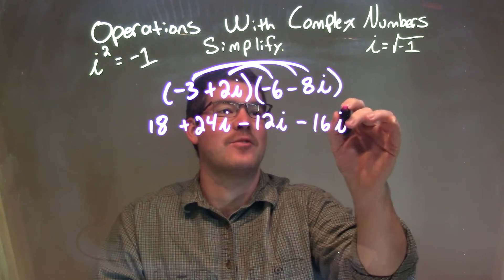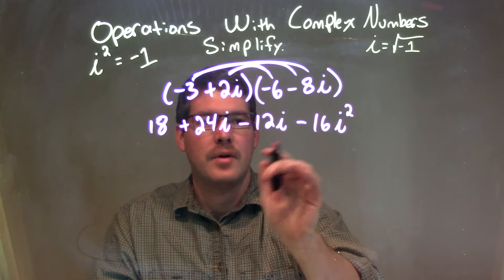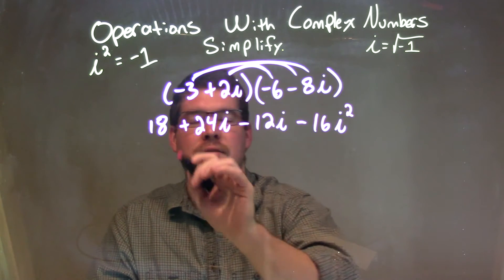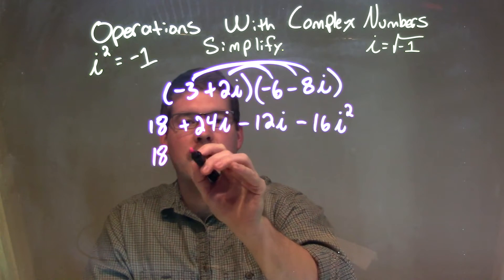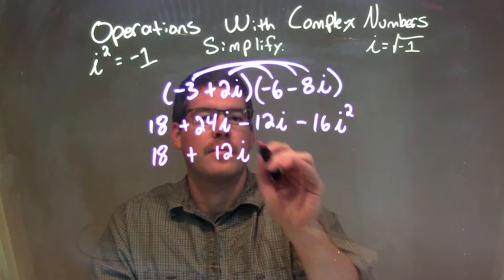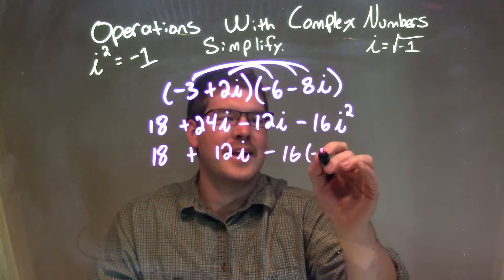And that's actually negative 16i squared. Sorry about that. Okay, so now we want to combine, alright? Let's go combine the 24i and the negative 12i. So, we bring down the 18.